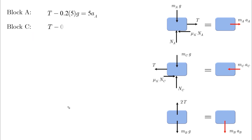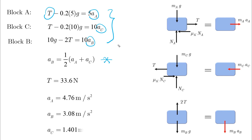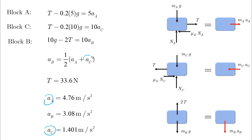After substitution, we have three force equations for blocks A, C, and B, plus the acceleration constraint equation — four equations with four unknowns: T, AA, AC, and AB. Solving gives the tension and the three accelerations. As a final check, substitute AA and AC into the constraint equation and verify that (AA + AC) / 2 equals AB = 3.08 m/s².